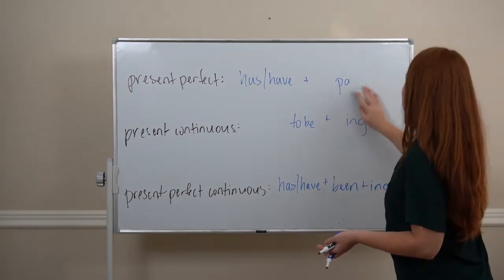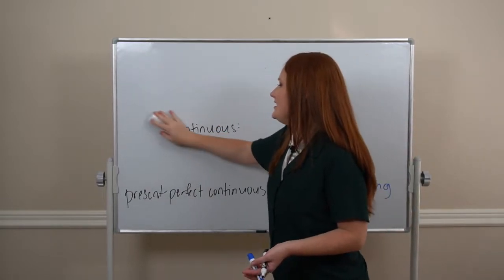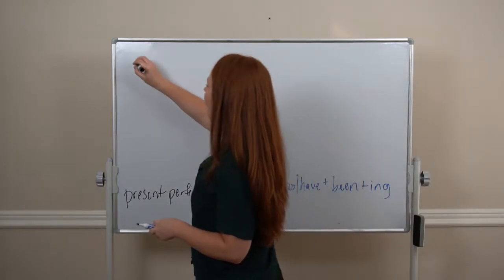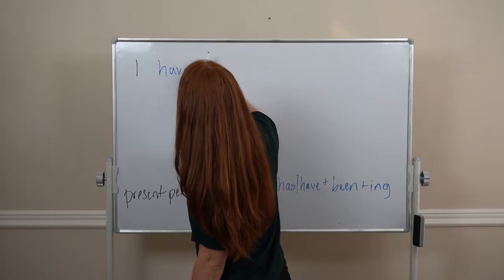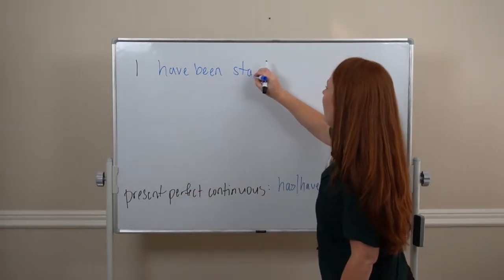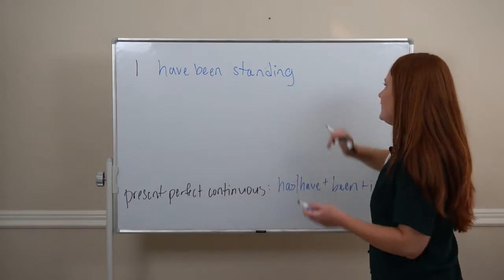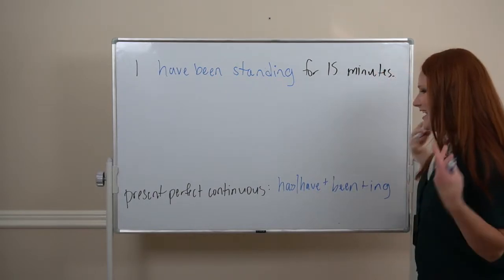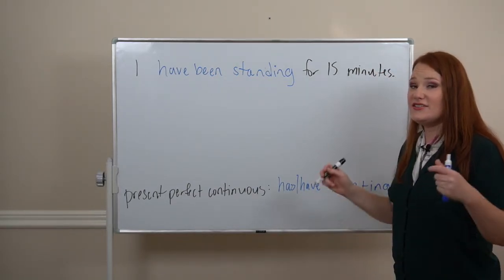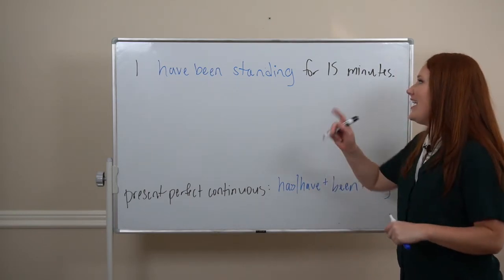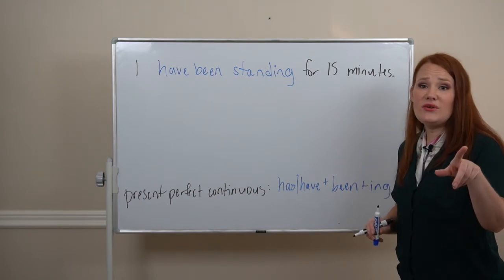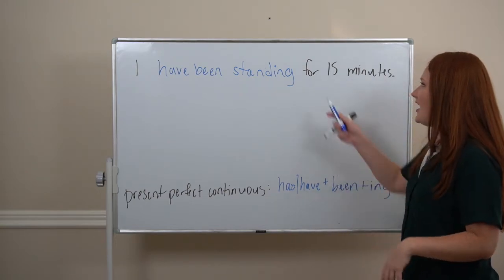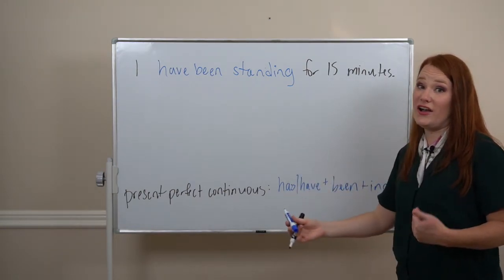So, for example: I stood up 15 minutes ago and I am still standing right now. So we say: I have been standing for 15 minutes. This is an action, an activity that's happening — started in the past, it's still happening. You have been listening to me for five minutes maybe. So it's the action and that length of time, how long it's been happening.